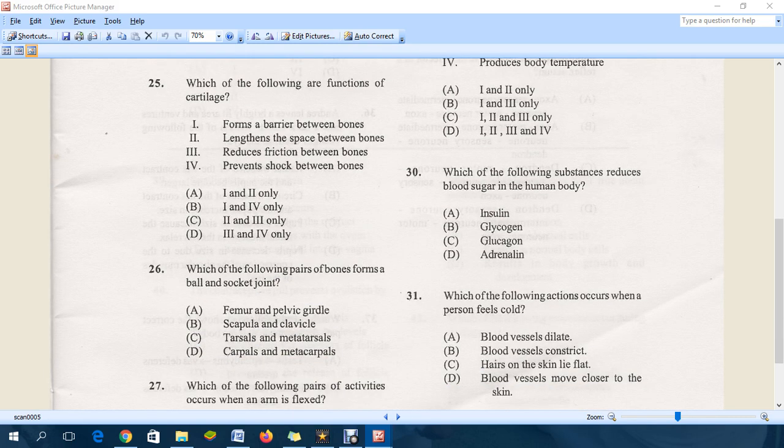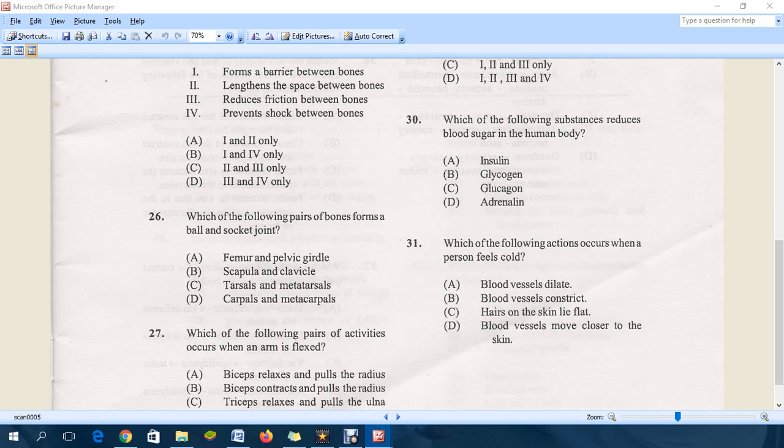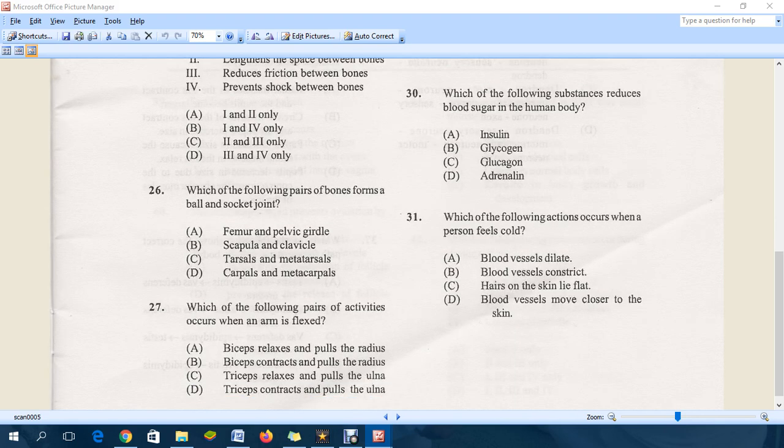Moving down to question 26: which of the following pairs of bones forms a ball and socket joint? We have femur and pelvic girdle, scapula and clavicle, tarsals and metatarsals, and carpals and metacarpals. The correct answer for this one is definitely A - femur and pelvic girdle. That is the joint within the hip region right there.